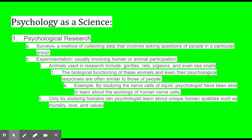Psychological research takes on many forms. Psychologists can conduct surveys that involve asking people questions. They can also conduct experiments within a lab that could involve human or animal participation. Some animals used in research include gorillas, rats, pigeons, and sea snails. The biological functioning of these animals and their psychological responses are often similar to those of people — that's why they study them. By studying the nerve cells of a squid, psychologists have been able to learn about the workings of the human nervous system. Only by studying humans can psychologists learn about unique human qualities such as morality, love, and values.